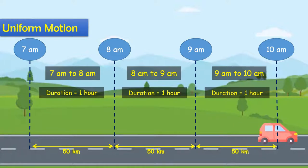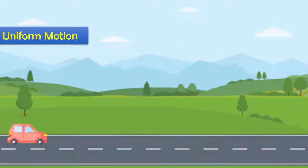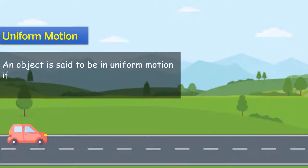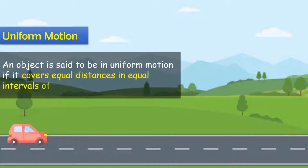In each time interval, the body travels a distance of 50 km. The consistent nature of the body's distance — 50 km in each hour — shows the same uniform motion.